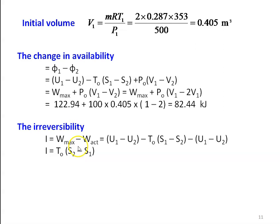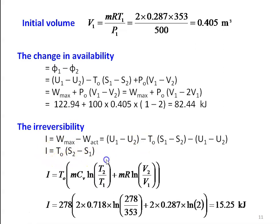Irreversibility I = W_max − W_actual. Since W_actual = U1 − U2 and the (U1 − U2) terms cancel, I = T0(S2 − S1) = T0·M·[Cv·ln(T2/T1) + R·ln(V2/V1)]. Substituting: I = 278×[2×0.718·ln(278/353) + 2×0.287·ln(2)] = 15.25 kJ.